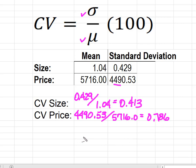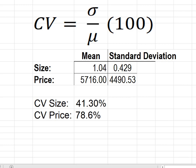So I'm going to multiply each of those times 100 so that I can compare the two percentages. Through the magic of my $5 calculator, I know that the coefficient of variation for size is 41.30%, and coefficient of variation for price is 78.6%.